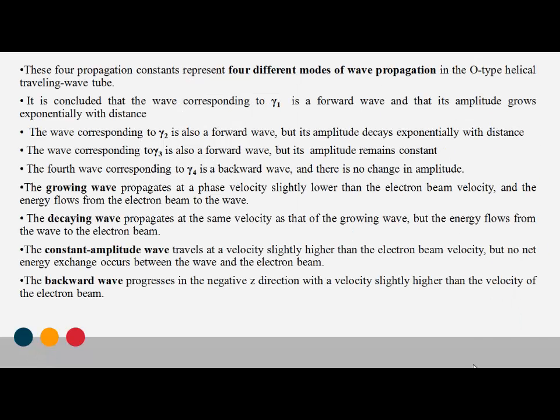The four propagation constants represent four different modes of wave propagation. Gamma-1 through gamma-3 are forward waves, and gamma-4 is the backward wave. For gamma-1, the amplitude grows exponentially with distance. For gamma-2, the amplitude decays exponentially with distance. For gamma-3, the amplitude remains constant. For gamma-4, the backward wave, there is no change in amplitude.